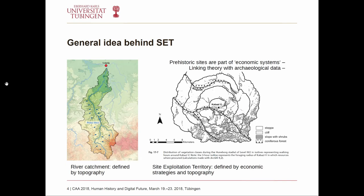The general idea of site exploitation territories was that, like every river has a certain catchment area defined by topography, each archaeological site also has a catchment area defined by economic strategies and local topography. This leads to the point that each archaeological site has an individual site exploitation territory, much like every river has a unique catchment area. This led to the thinking that prehistoric sites are not just isolated phenomena but parts of economic systems, and the concept was used as a middle-range theory to link theory with archaeological data regarding space and landscapes.